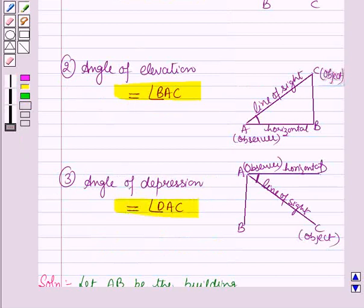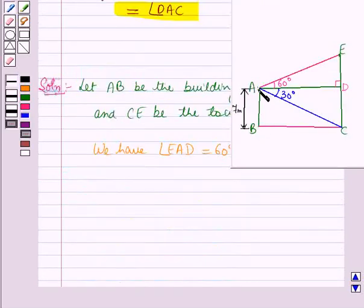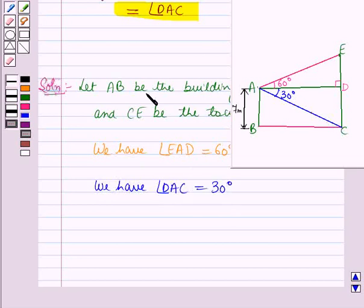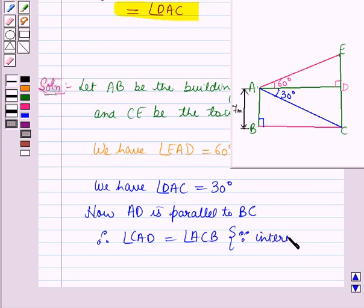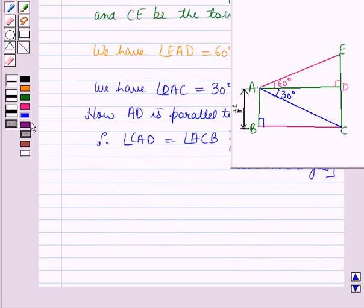Using the key idea, from the top of the building the angle of depression of the foot of the tower is 30 degrees, so angle DAC is equal to 30 degrees. From the diagram, AD is parallel to BC, therefore angle CAD is equal to angle ACP as these are interior alternate angles. So angle ACP is equal to 30 degrees.